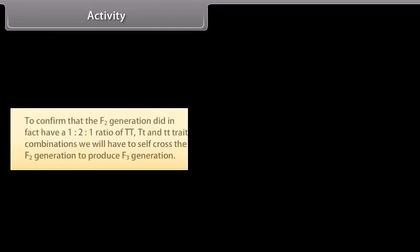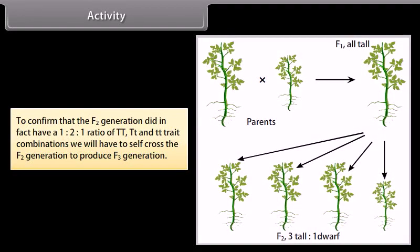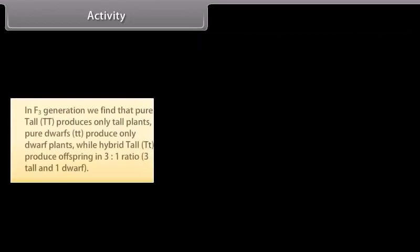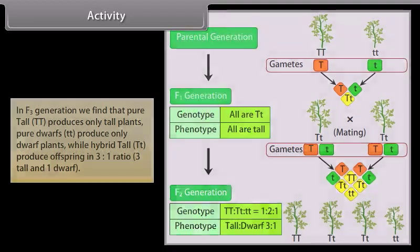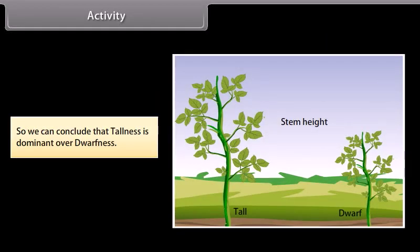Activity. To confirm that the F2 generation did in fact have 1 is to 2 is to 1 ratio of TT, Tt and tt trait combinations, we will have to self cross the F2 generation to produce F3 generation. In F3 generation, we find that pure tall TT produces only tall plants, pure dwarfs tt produce only dwarf plants, while hybrid tall Tt produce offspring in 3 is to 1 ratio, 3 tall and 1 dwarf. So, we can conclude that tallness is dominant over dwarfness.